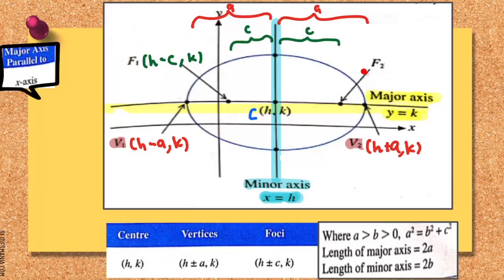For the coordinate of F2, originally the x-coordinate is h, but now you have gone to the right as much as distance c. Therefore the coordinate becomes (h plus c, k), because you are going to the right, and the y-coordinate doesn't change — it is still k. So this is the coordinate for F1 and this is the coordinate for F2.